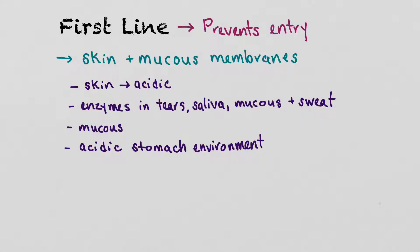Examples of our first line of defense include our skin, which is acidic, preventing some bacteria and pathogens from living on it. We have enzymes in many body secretions — tears, saliva, mucus, and sweat — that help kill off invaders. We also produce mucus in our respiratory tract, lining the nose, trachea, bronchi, and bronchioles, which traps invaders. Cilia, tiny hair-like structures, sweep pathogens upward and out, and coughing or a runny nose also helps expel them.